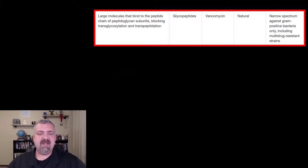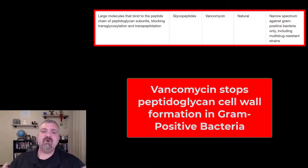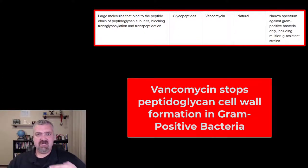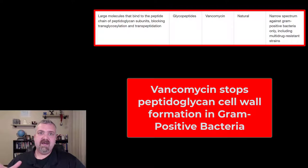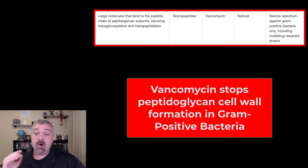Let's talk about vancomycin the antibiotic first. It is a glycopeptide antibiotic — it's a large structure. What this one does is different. The cell wall inhibitors we talked about before, the beta-lactams, actually interfere with the fusion of the carbohydrate backbones and the peptide chains holding them together. Vancomycin does the same thing but in a different place — it actually blocks the proteins so they can't be incorporated into the cell wall.